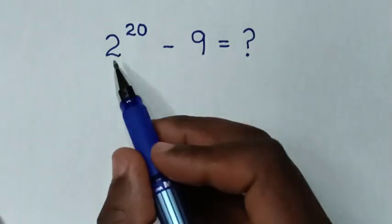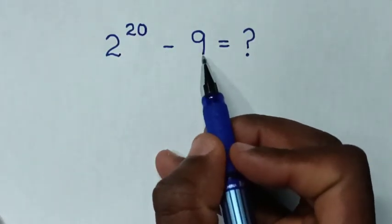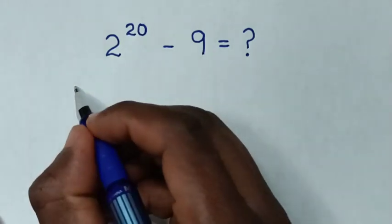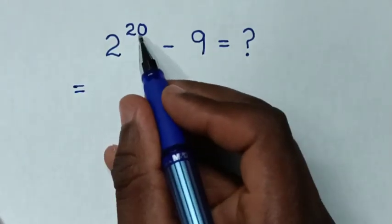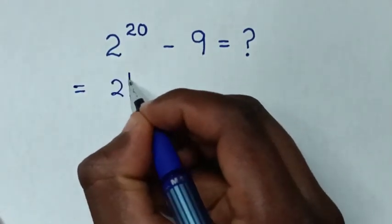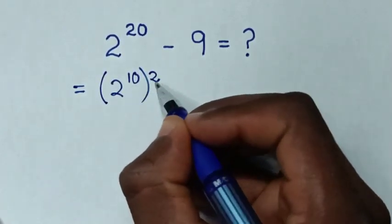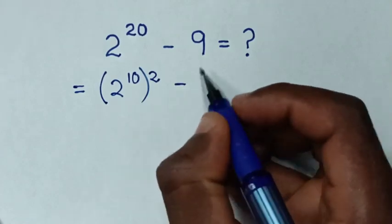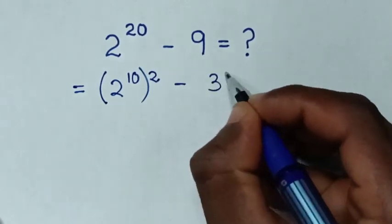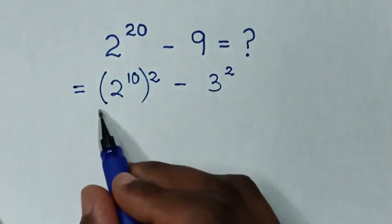Hello! How to solve 2^20 - 9? It will be equal to (2^10)^2 - 3^2, because the power of 10 times 2 equals the power of 20, and 9 equals 3^2.